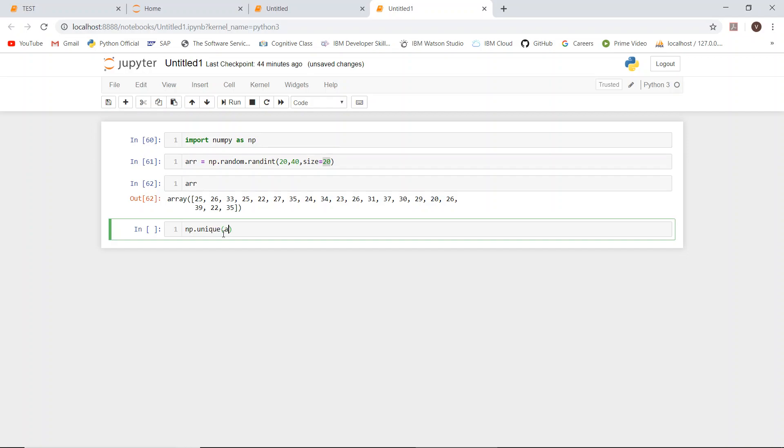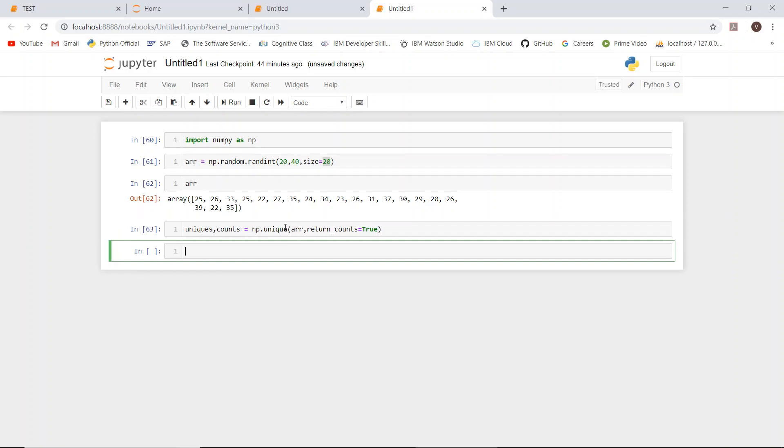elements in this array and their counts. Let's do it: np.unique of the generated array, comma, return_counts equals True.